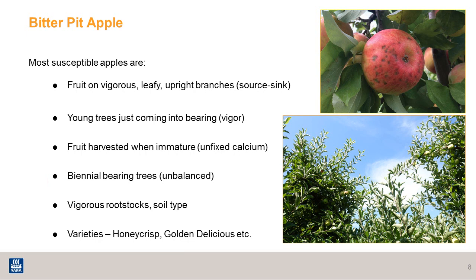Biennial bearing trees — where one year the tree may have almost no fruit and the next year it has a very heavy crop — can have bitter pit problems. Vigorous rootstock and soil type are also factors. Lastly, the varieties most susceptible are Honeycrisp and Golden Delicious.